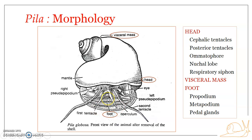The operculum is secreted by glands associated with the foot and remains attached to the metapodium, the posterior part of the foot. The foot is highly contractile; muscular contractions and relaxations bring about undulating movements which produce locomotion. The foot also contains pedal glands — named for their position on the foot — which secrete mucus. These mucus secretions help in easy creeping over the substrate.